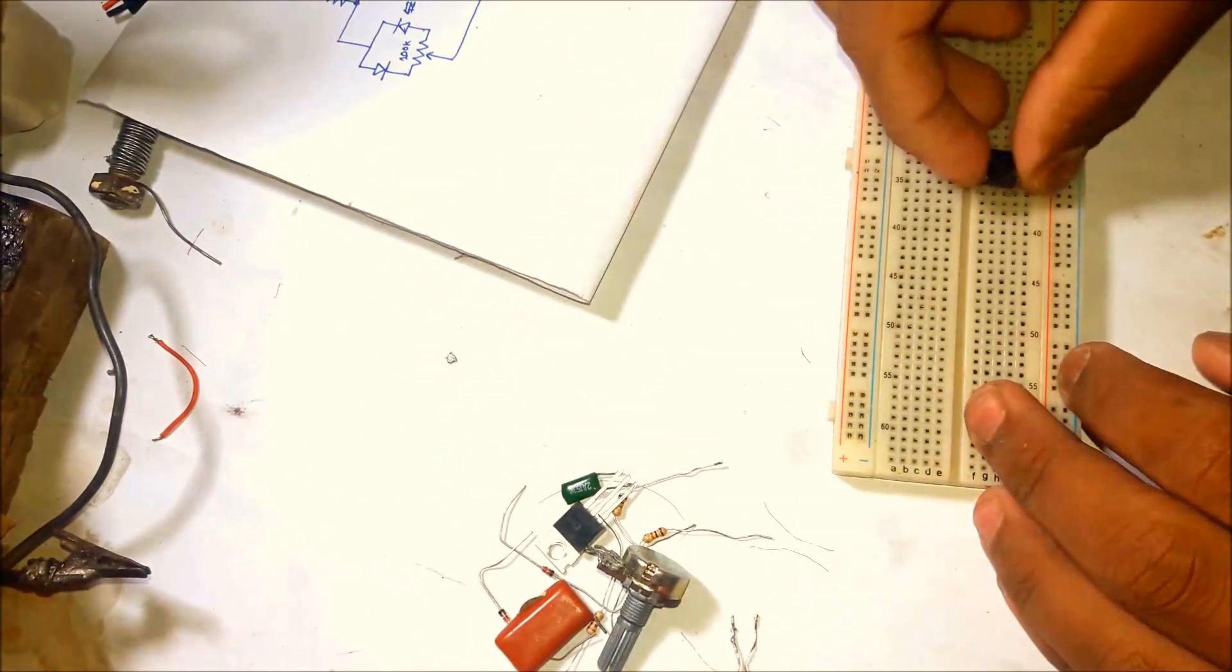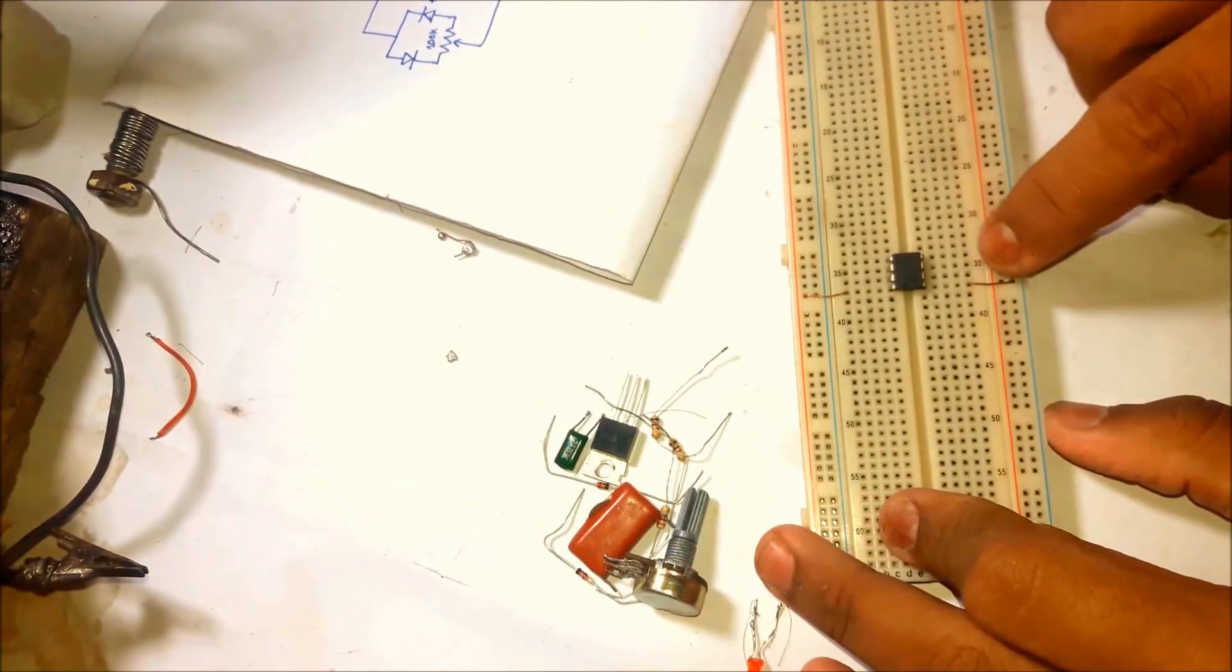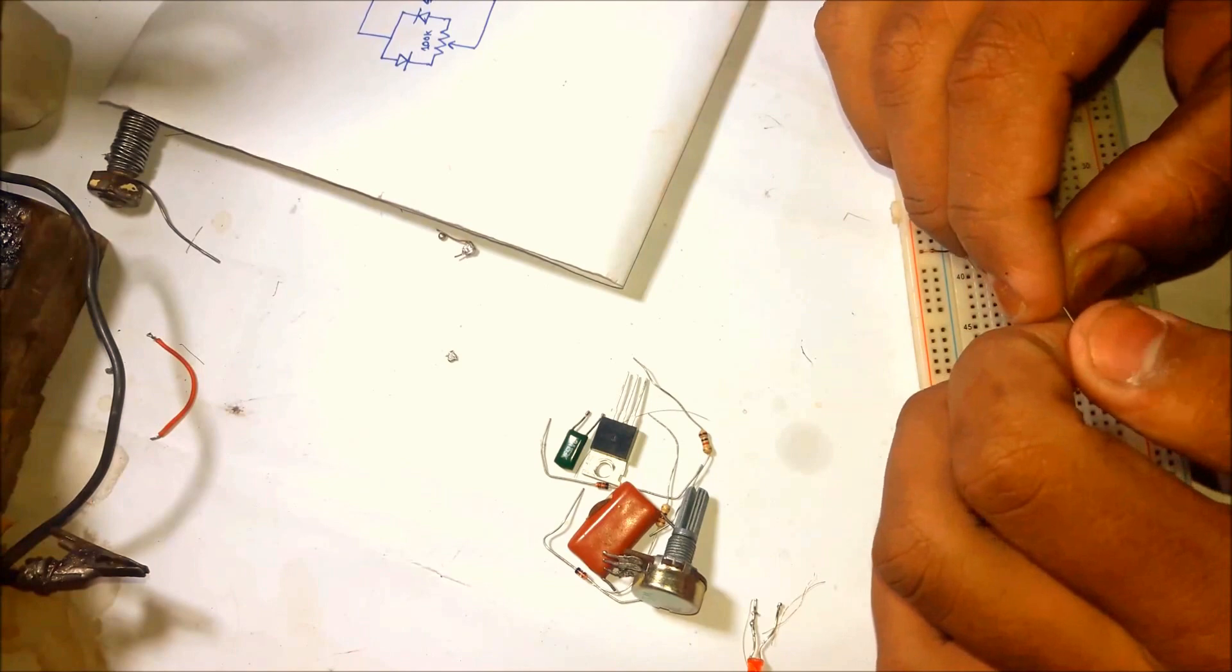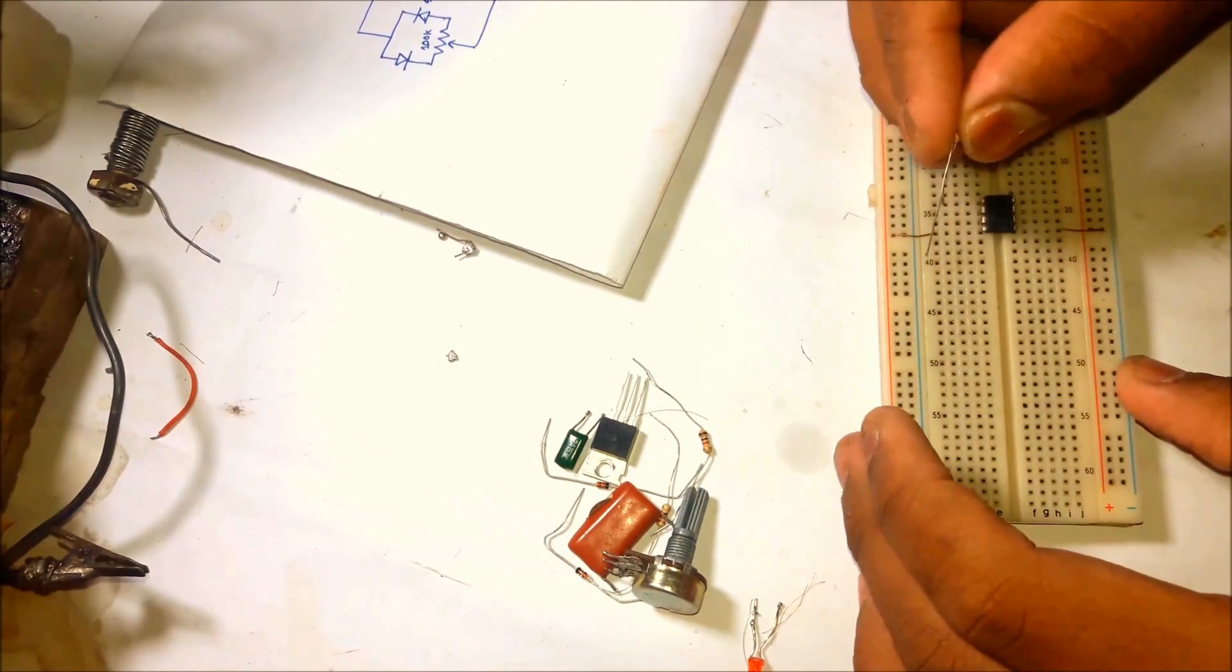I will start with mounting the 555 timer IC. I've connected pin 1 to the ground rail and pin 8 to the VCC. Now set the 1 kilohm resistor from VCC to pin 7.